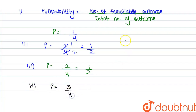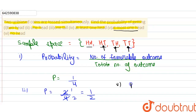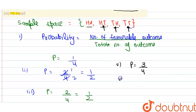For case five, the probability of at most one head — at most one head means a maximum of one head is possible, i.e., one or less than one head. There are three such cases, so the number of favorable outcomes is three and the total number of outcomes is four, giving probability three by four.